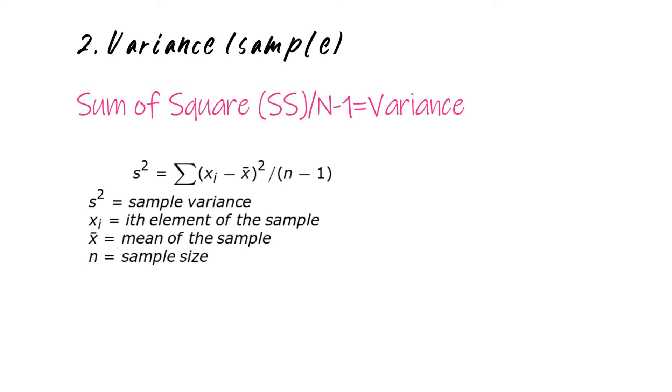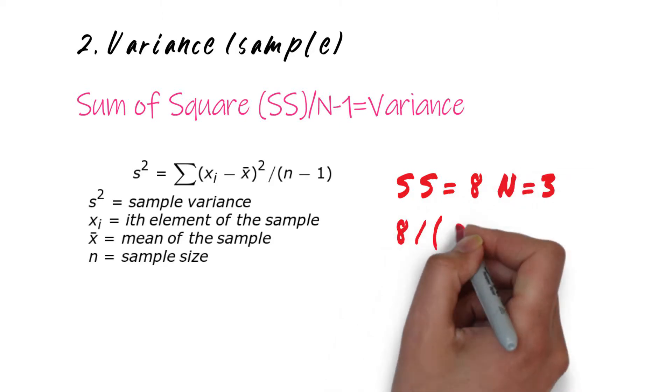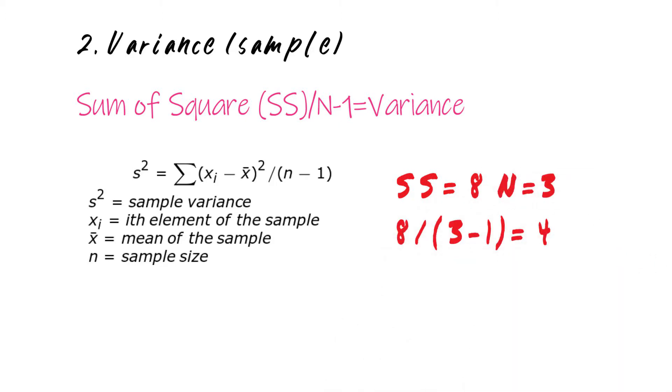So back to our example. Our sum of squares is 8. Our number of data points is 3. So 8 divided by 2 and that's 4. So our variance is 4.